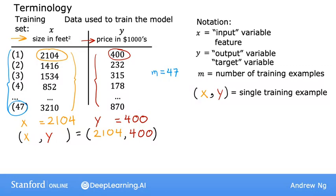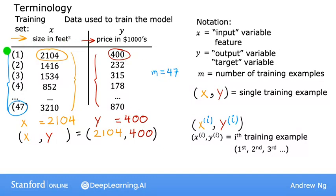To refer to a specific training example, this will correspond to a specific row in this table. I'm going to use the notation x superscript in parentheses i comma y superscript in parentheses i. This superscript tells us that this is the i-th training example, such as the first, second, or third, up to the 47th training example. For instance, x superscript 1 is equal to 2104 and y superscript 1 is equal to 400.